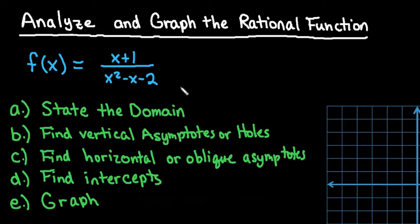For this particular one, because the degree of the numerator is less than the degree of the denominator, that tells us that there's going to be a horizontal asymptote and not an oblique asymptote. So you can always look at this and figure out from the very beginning whether you're going to have horizontal or oblique.